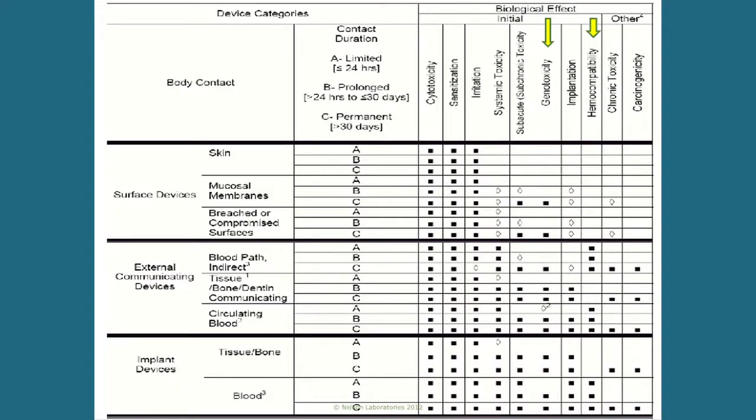Today we're going to be covering mostly genotoxicity and hemocompatibility — those two categories are the ones we're doing the most work with right now. Genotoxicity is pretty much set; we did the final comment review about a month ago and we're pretty much set with a new document that will be released. We're going to go over what that new document will contain.